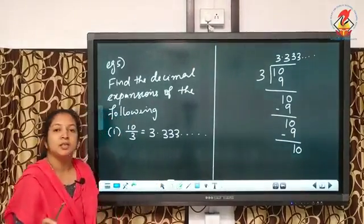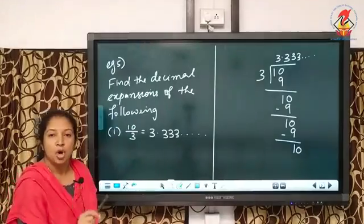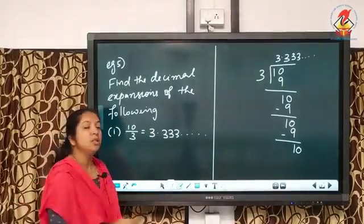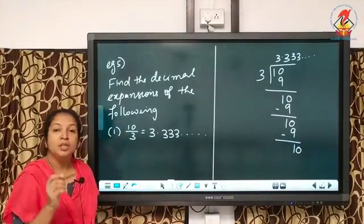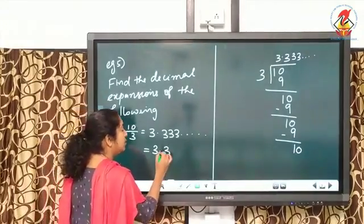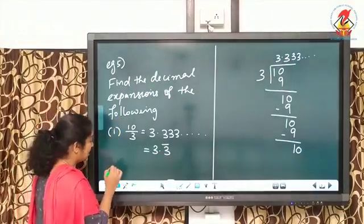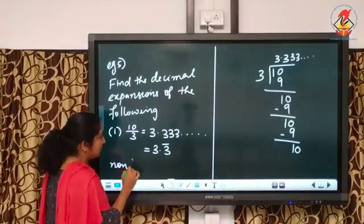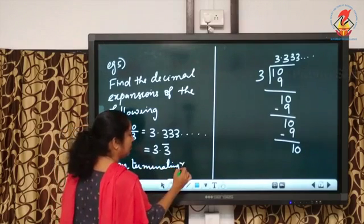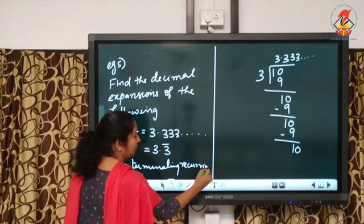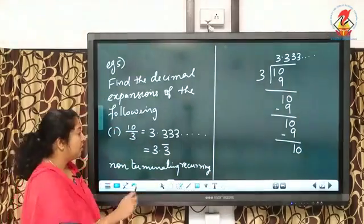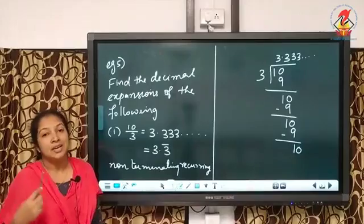We can say it is non-terminating, and the digit 3 is repeating, so we can say non-terminating recurring. We can write this as 3.3 bar. So this decimal is non-terminating recurring. Therefore, 10 by 3 is a rational number, and its decimal expansion is non-terminating recurring.